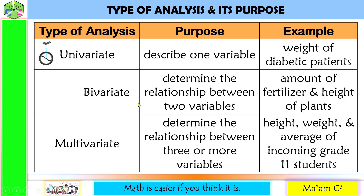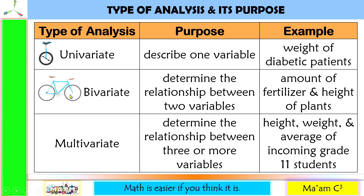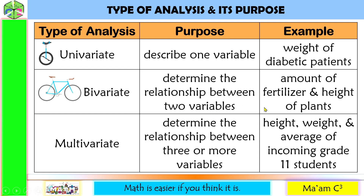Bivariate — from its prefix 'bi' — means two, just like a bicycle which has two wheels. The purpose of bivariate analysis is to analyze and determine the relationship between two variables. An example is the amount of fertilizer and height of plants.